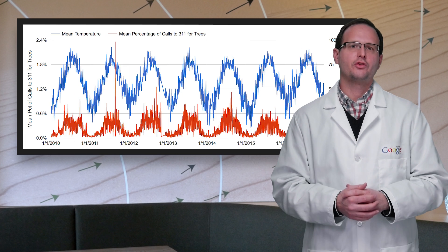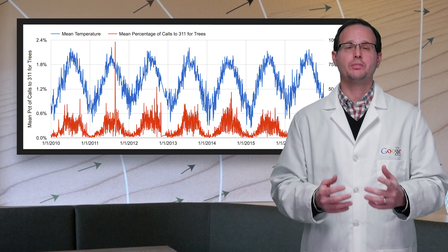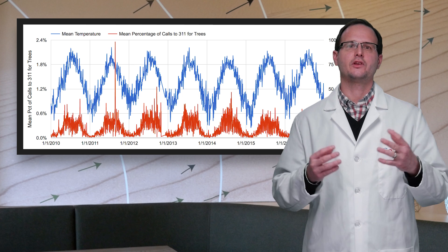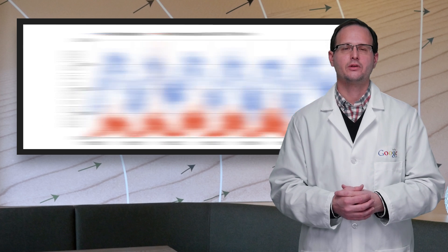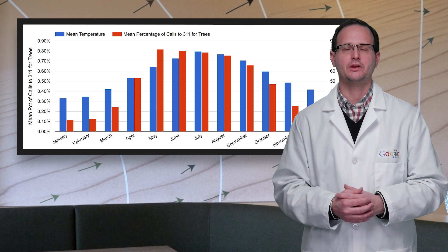You'll notice that there are a lot of strong correlations with temperature, such as complaints about trees. Now, the clearest thing in this graph is that there's a seasonal pattern affecting both, which is made even clearer when you look at the monthly averages.